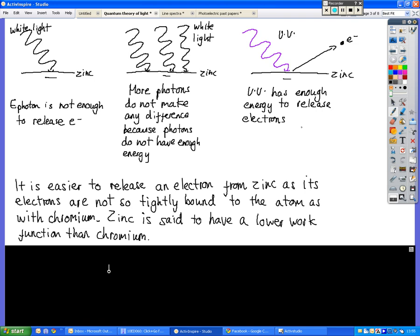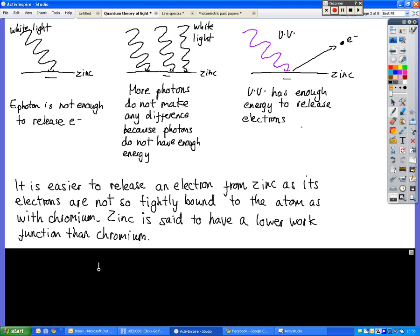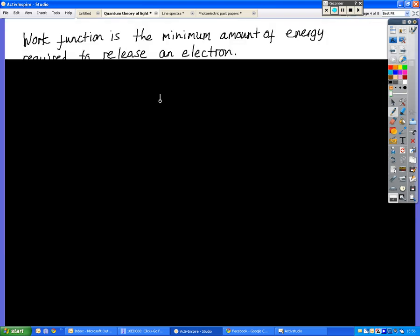So we used zinc because it was easier to release an electron from zinc. When we used chromium, in other words without any metal on the top of the surface of the electroscope, it wasn't enough to eject any electrons from that. So we can say that because it's harder to eject electrons from chromium than it is from zinc, that chromium has a higher work function than zinc does, or zinc has a lower work function than chromium. A work function is a measure of how easy it is to eject an electron to the surface.